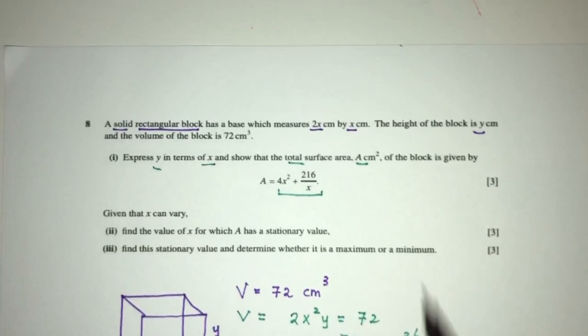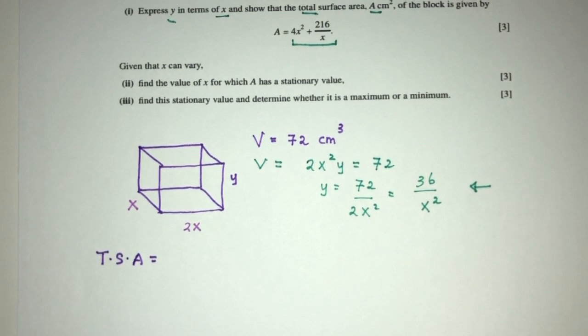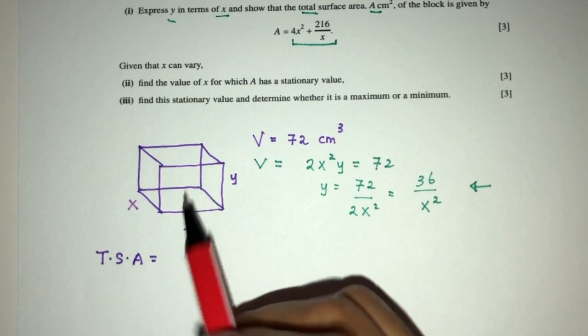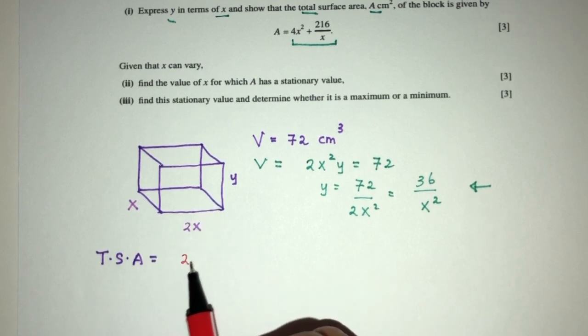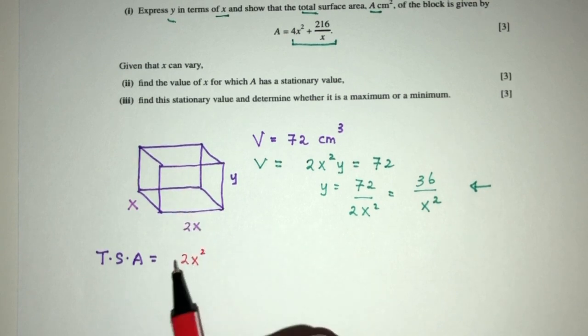Now part two, we have to find the total surface area. TSA, total surface area. Let's see how can we find those areas. Let's look at the object. We have the base area, which is what? 2x times x will be 2x squared. But now the base and the top will be the same, so we have to times 2.